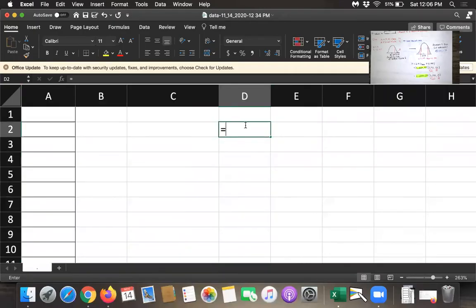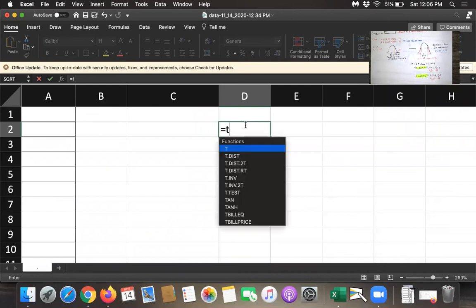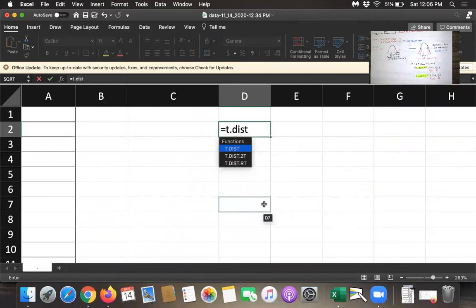Okay so we'll enter equals t.dist t and then you've got your three student t distribution functions. tdist gives you the area to the left of a particular t value when you know the degrees of freedom. The 2t one will give you area in two tails so it'll give you the area beyond your test statistic either to the right or to the left depending on whether you're on the right or left side of the distribution and then it doubles it or t.dist.rt gives you the area in the right tail.